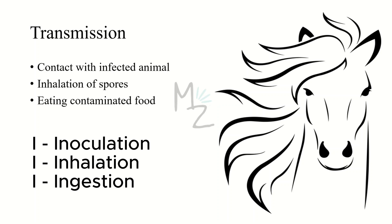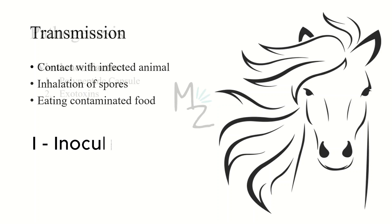Infected animals can be horses or sheep. The second I is inhalation of spores — taking spores into the respiratory system. The third I is ingestion — eating contaminated food.